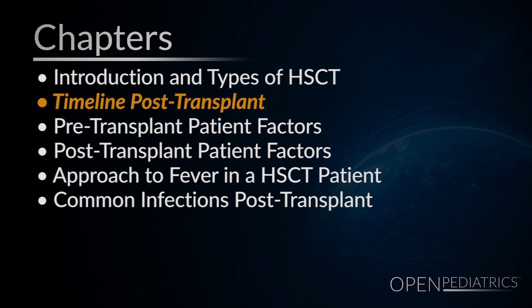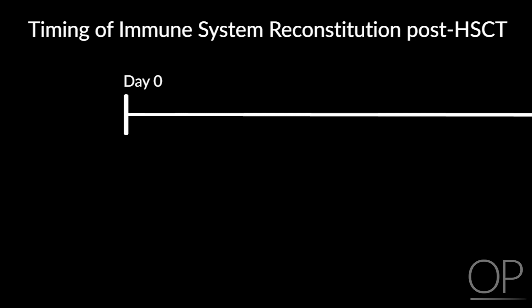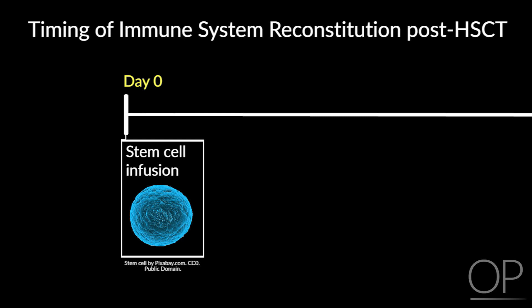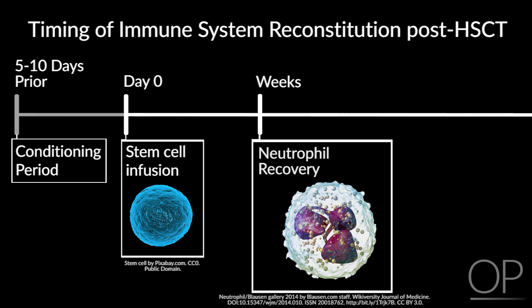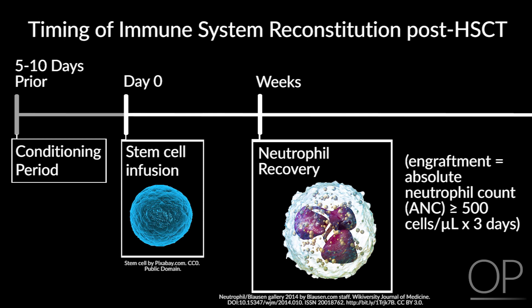The second thing affecting immune reconstitution post-transplant is the time from the transplant itself. We label day zero as the day the stem cells are infused back into the patient, with a conditioning period of usually 5 to 10 days before that. Following day zero, immune function recovers in stages. Neutrophils return first, within weeks, and we define engraftment as when the absolute neutrophil count has been greater than 500 for three days — around day 12 to 15 in autologous transplants, and around day 20 in allogeneic transplants.